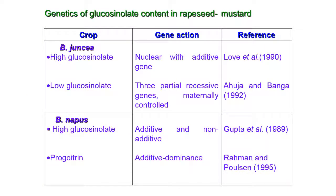Coming to genetics of glucosinolate content in rapeseed and mustard: in Brassica mustard, the low glucosinolate content has nuclear with additive genes as well as 3 partially recessive genes that are maternally controlled. In Brassica napus, high glucosinolate is controlled by additive and non-additive gene action. For progoitrin, it is additive dominance gene action.